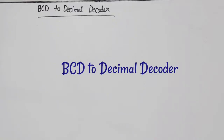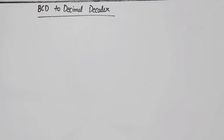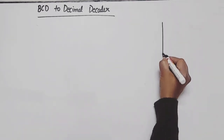Hello everyone. In this video lecture of digital system design or digital electronics, I am going to design a BCD to decimal decoder, or we can say BCD to decimal code converter. BCD to decimal means the input will have BCD numbers and the output will give decimal numbers. BCD means binary coded decimal, and decimal numbers are 0 to 9. With BCD we represent only 0 to 9.